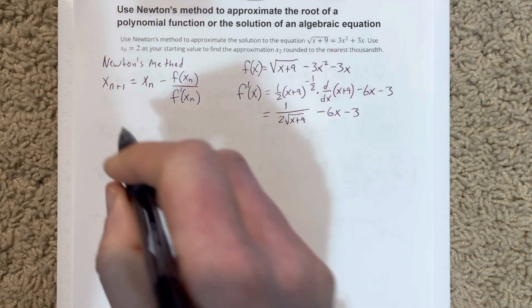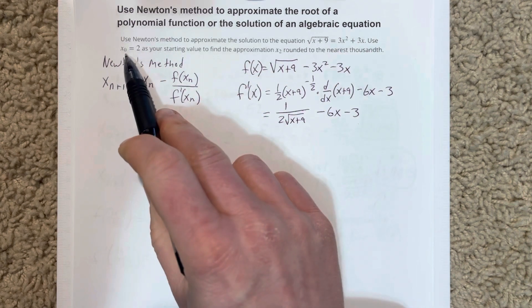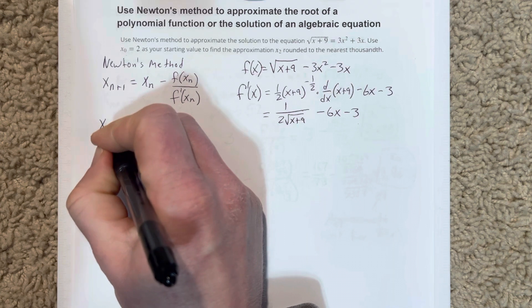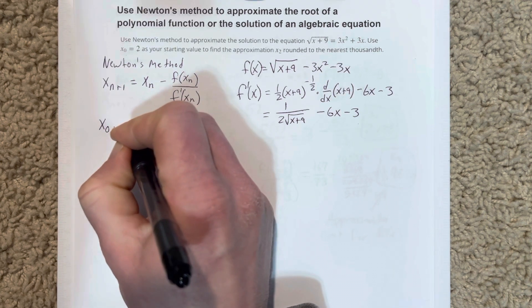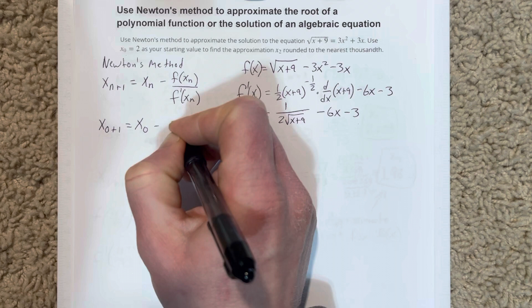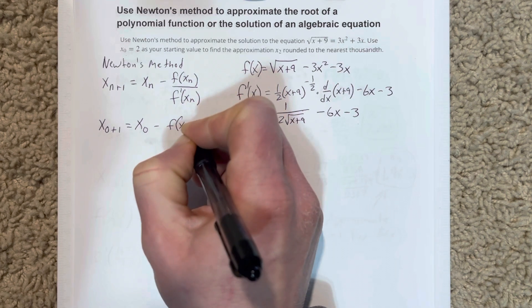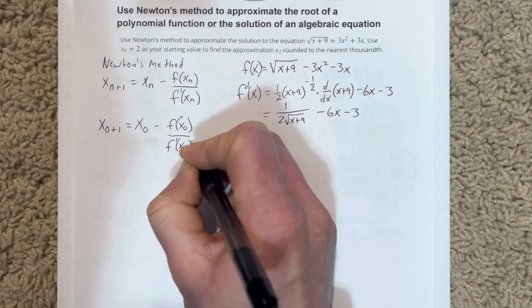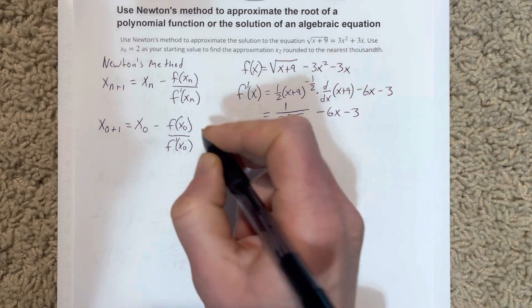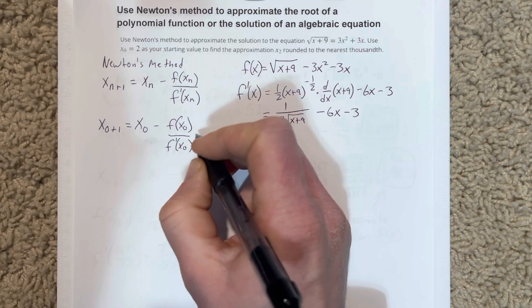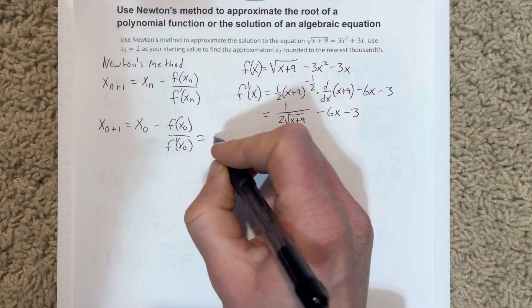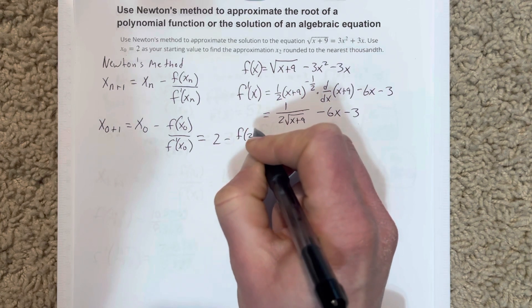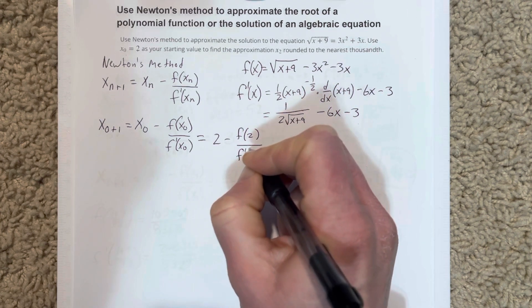Now I'm going to go through and I'm actually going to use this x0 being 2 value. We're going to say x0 plus 1 is equal to x0 minus f of x0 over f prime of x0. I'm going to go through and write that that is equal to x0 is 2, so it's 2 minus f of 2 over f prime of 2.